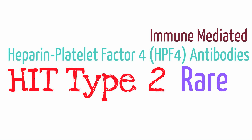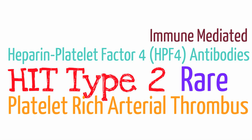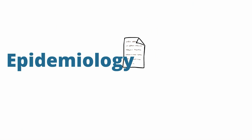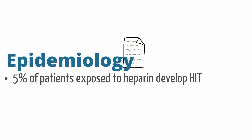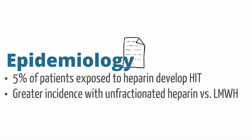Type 2 HIT involves the formation of heparin platelet factor 4 complex antibodies. We'll discuss how these antibodies play a role in immune-mediated thrombocytopenia shortly. HIT type 2 is a very rare disorder and can lead to thrombi, including arterial thrombi, that are very platelet-rich. Only 5% of patients with prolonged exposure to heparin are likely to develop HIT. Patients on unfractionated heparin have a higher risk than those on low molecular weight heparin.